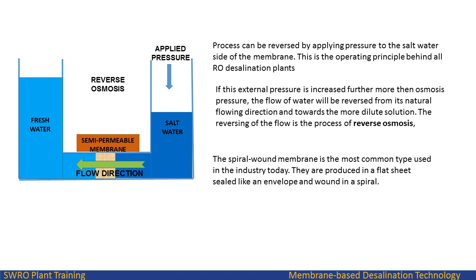The reversing of the flow is the process of reverse osmosis. The spiral wound membrane is the most common type used in the industry today. They are produced in a flat sheet sealed like an envelope and wound in a spiral.